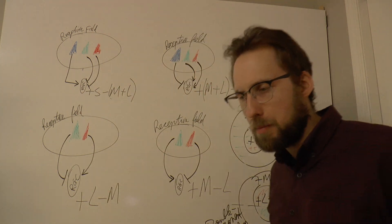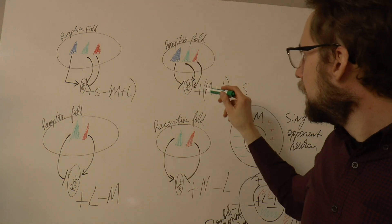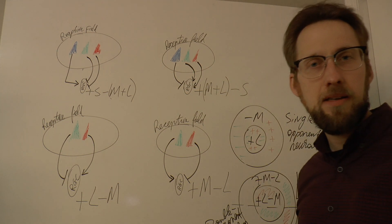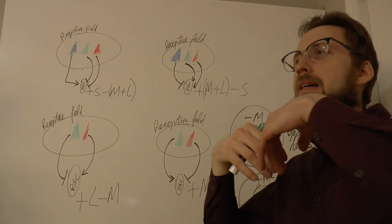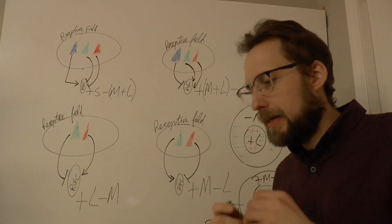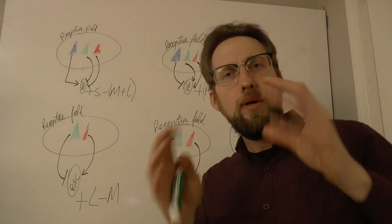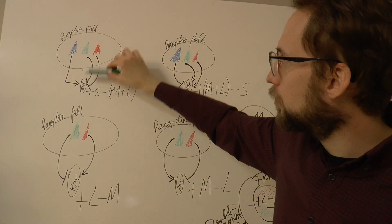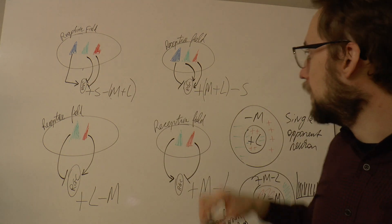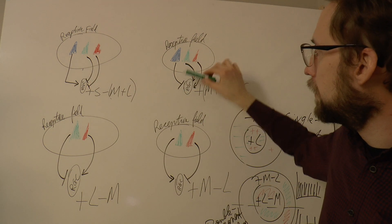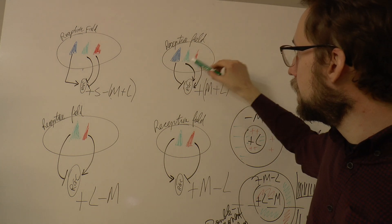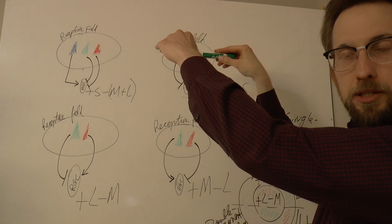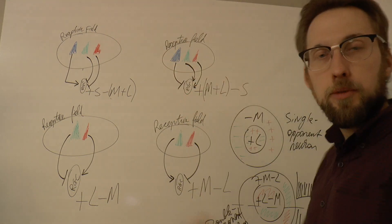That was all I was trying to say, but I was overcomplicating it. The opposite system is plus ML minus S. This system gets excited by short wavelengths and inhibited by medium wavelengths. The plus ML minus S system gets inhibited — that's what that bar means — by short wavelengths, and excited by medium and long wavelengths. So for short wavelengths, action potentials from the ganglion cell go down; for medium and long wavelengths, action potentials go up.